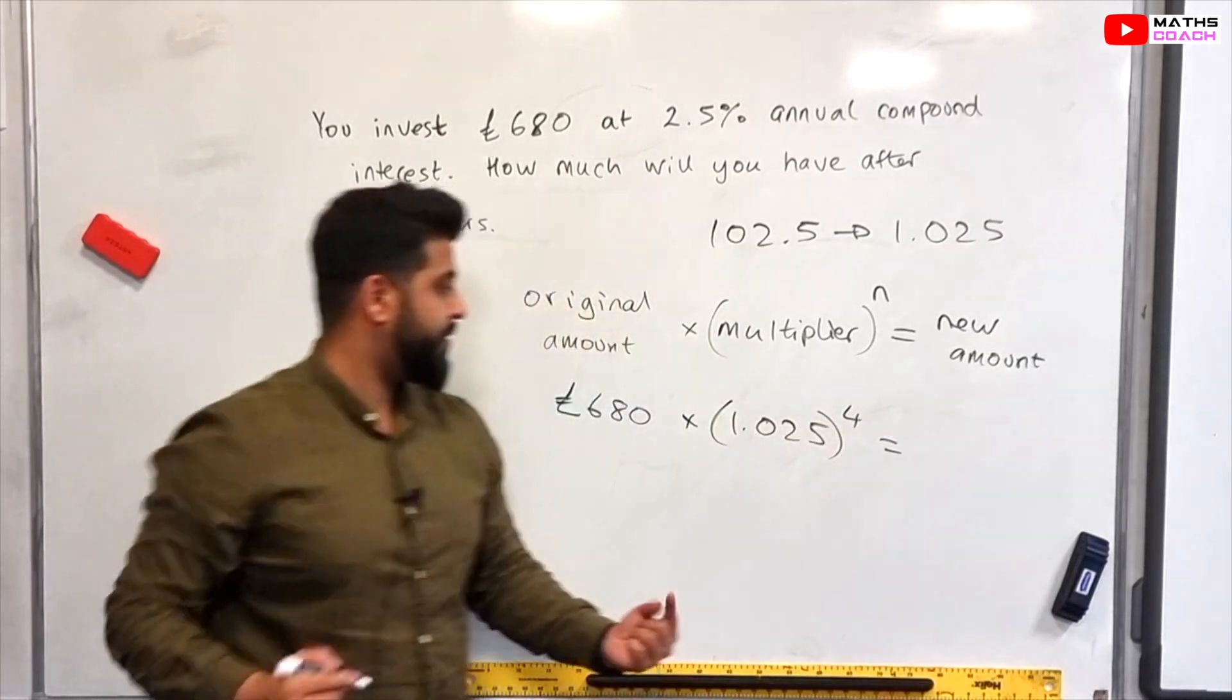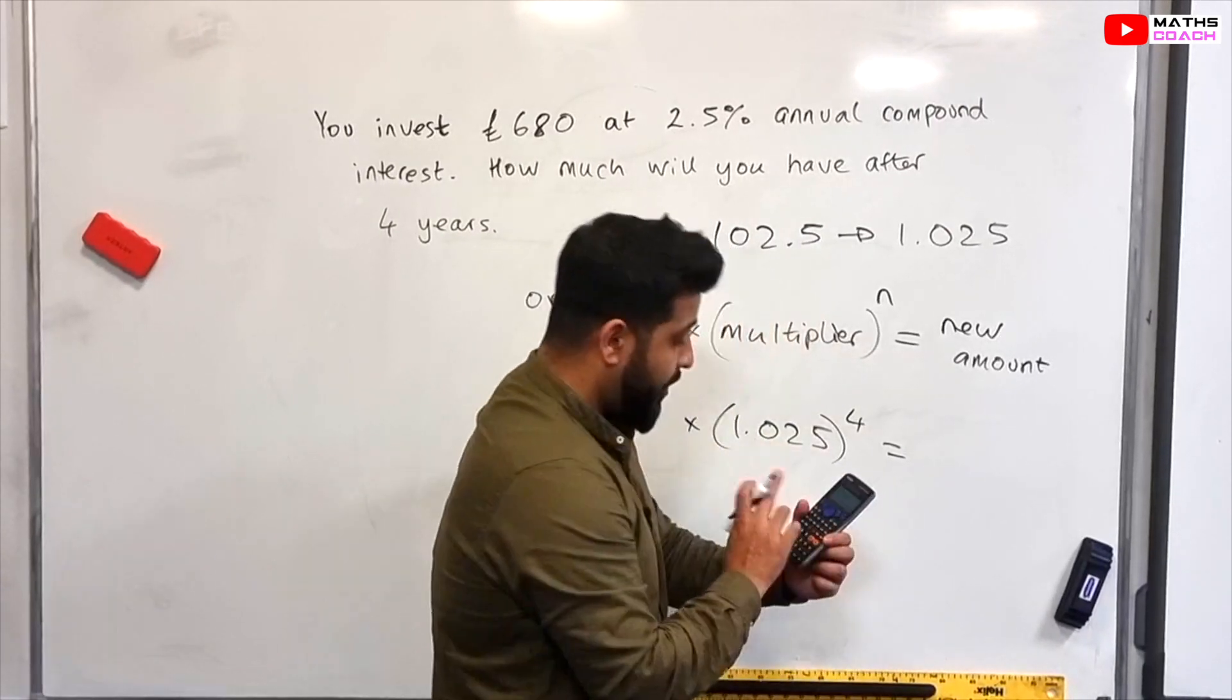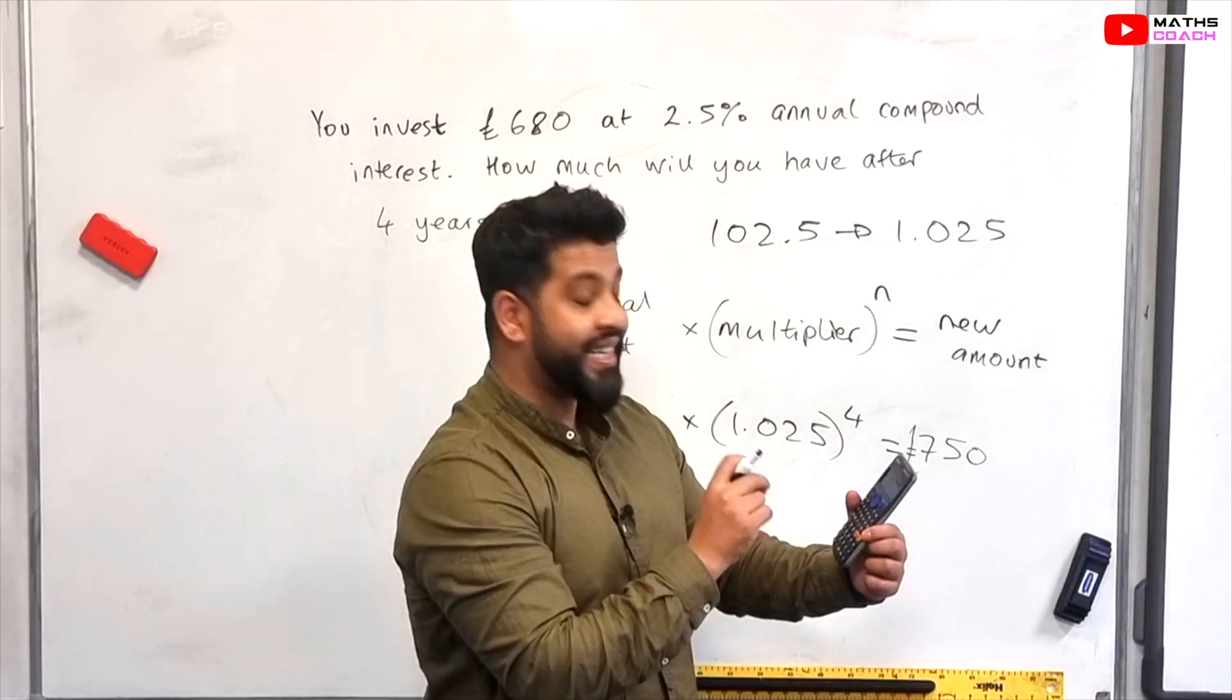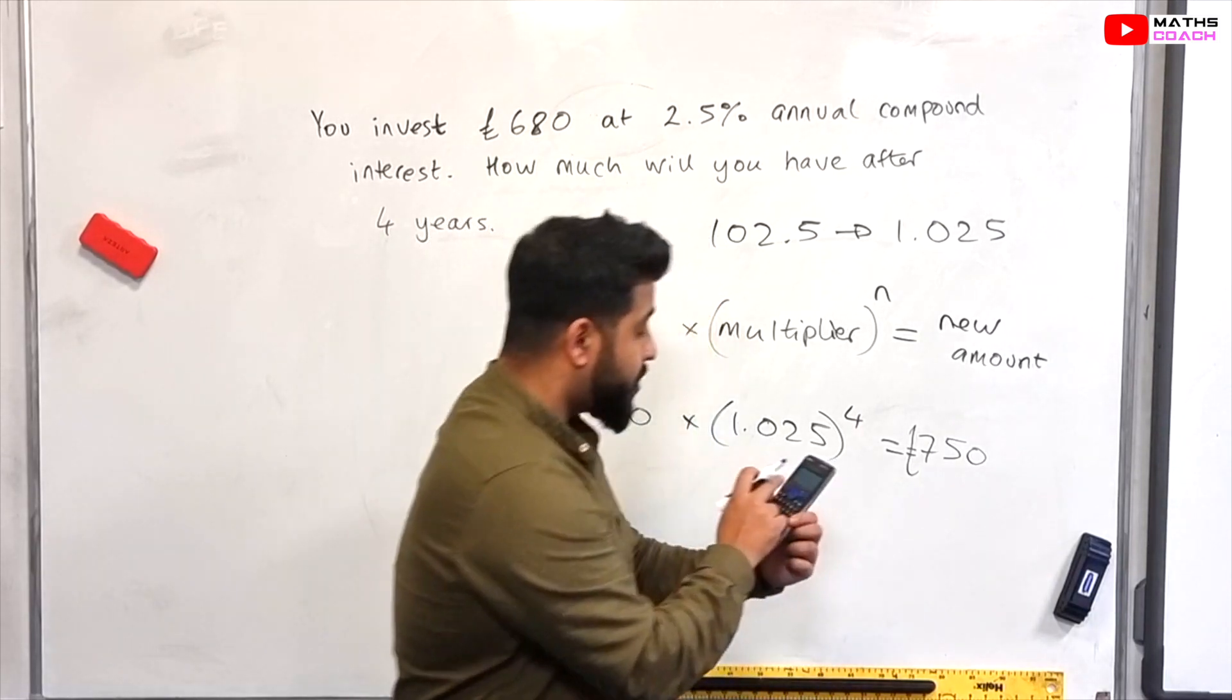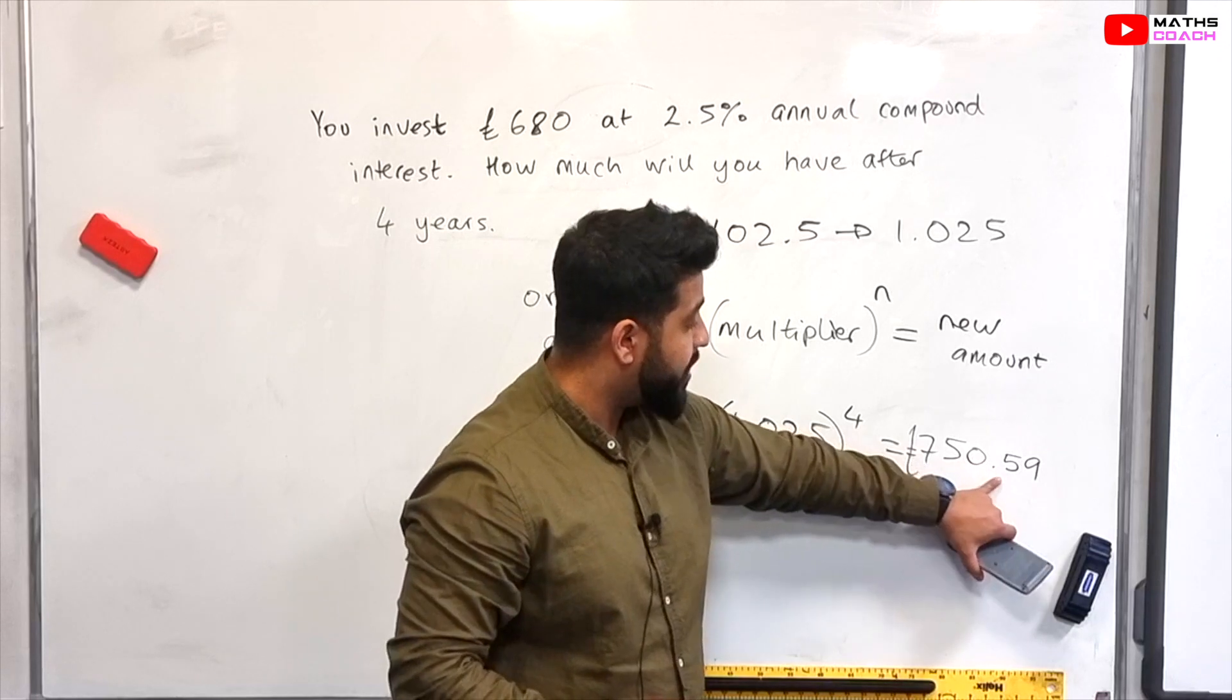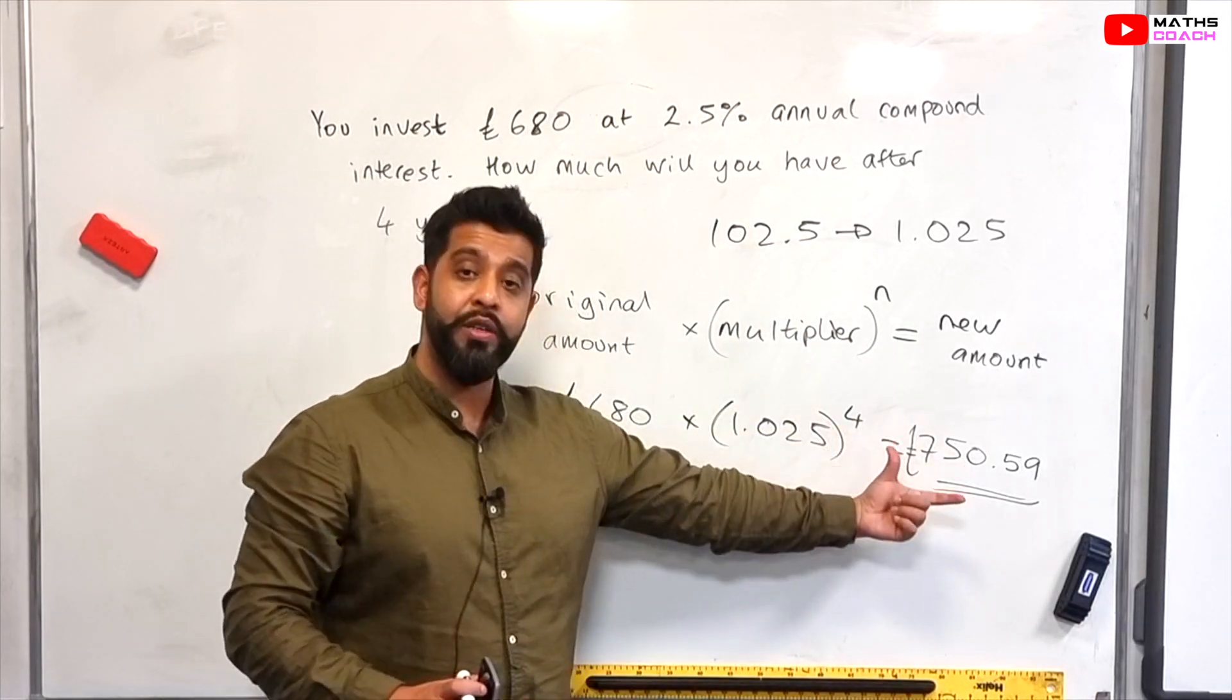Now we'll just get our calculator and we'll stick this straight into our calculator. Let's just put a bracket around that just to make it stand out. So we're going to do 680 times by 1.025 to the power of 4. And that gives us 750.5927656. Now because it's money you have to round this to two decimal places. So £750.59. So this is how much we will have at the end of four years. So as you can see we can just do one line and straight away we can get the answer.